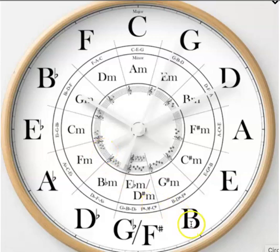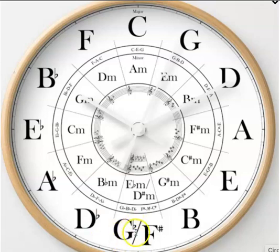B is in the five o'clock position — the letter B looks somewhat like the number five — and it has five sharps. D-flat has five flats. G-flat and F-sharp are the same key and they have either six flats or six sharps. It's in the six o'clock position. So we look for patterns.